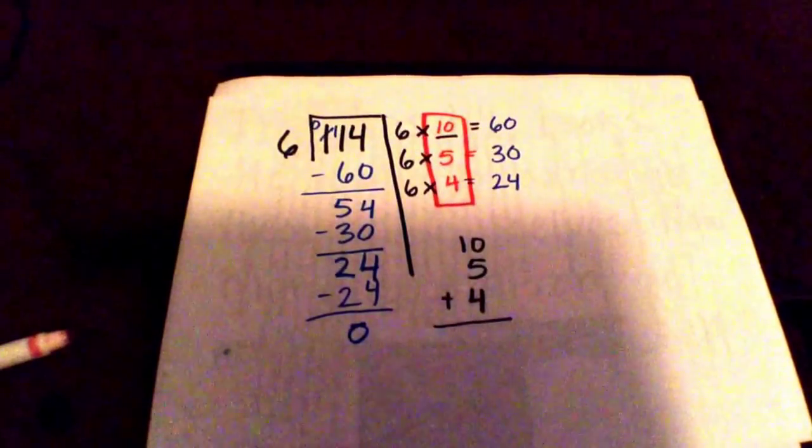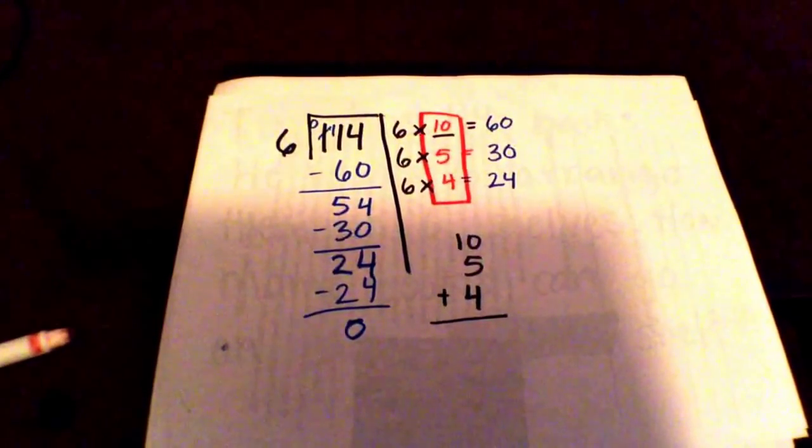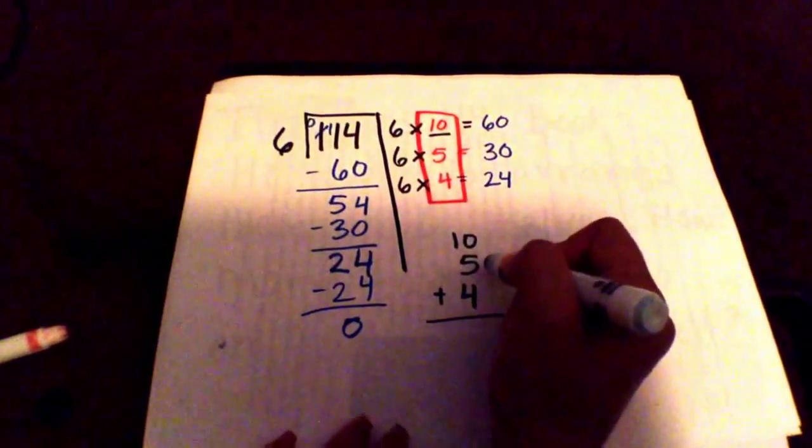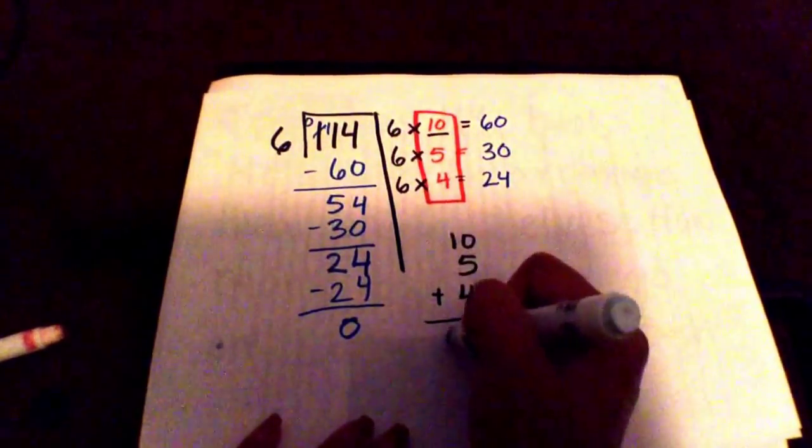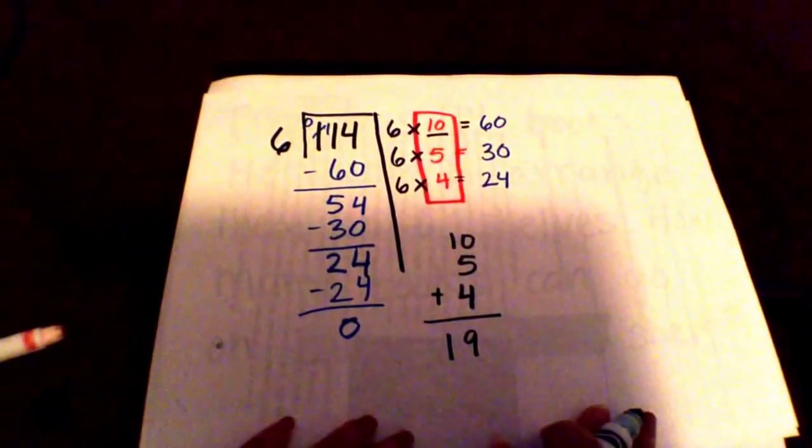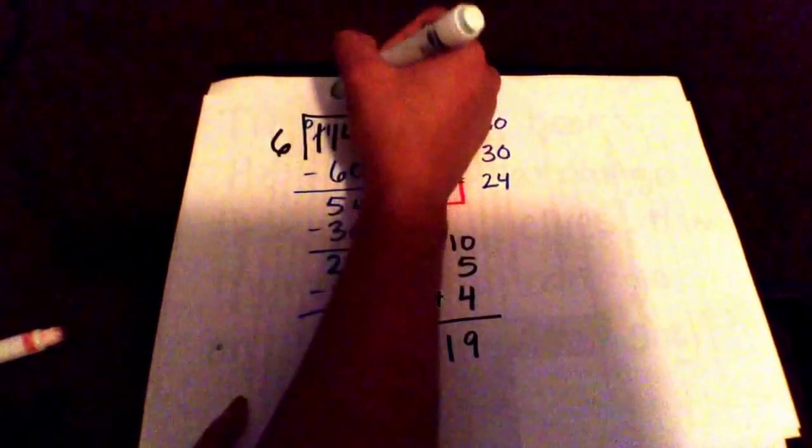I'm going to add these. Zero plus 5 plus 4 is 9, and then 1, which makes it 19. So I'm going to put 19 up here.